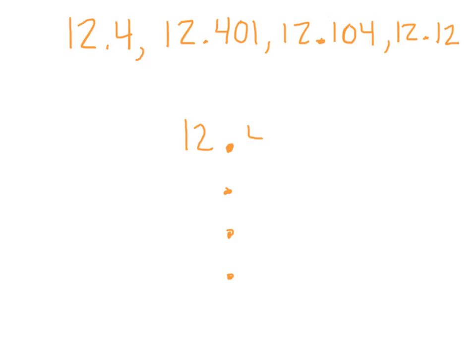So I always write my decimals first. And then I go back and I fill in my digits. Right. So I'm just writing what's above. Twelve and four-tenths. Twelve and 401 thousandths. Twelve and 104 thousandths. Twelve and twelve hundredths. Beautiful. So you can see, place value-wise, they all line up where they're supposed to be.